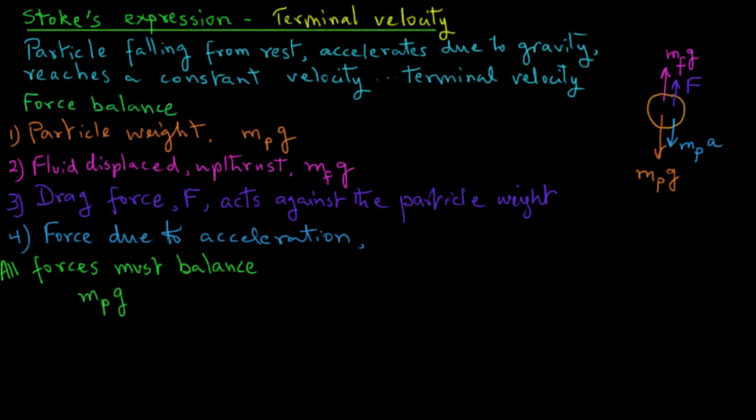We have MP times G for the particle weight, plus MP times A for the force due to acceleration, and that equals the force due to the upthrust, the mass of fluid times acceleration due to gravity, plus the drag force. Now we can rewrite this equation by replacing the acceleration, A, with the change in velocity with time, du over dt.